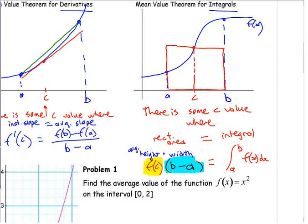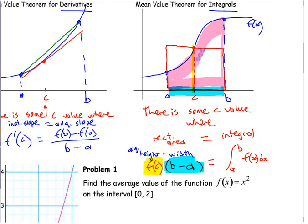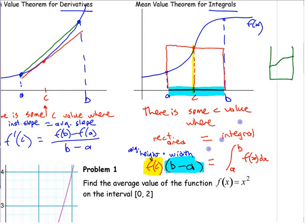This is just saying height times width of that rectangle equals the area under the curve. You're taking that area and redistributing it so it's all flattened out. Like sand in a glass: you shake it and it levels out, and whatever level it comes to is the average height of the function.